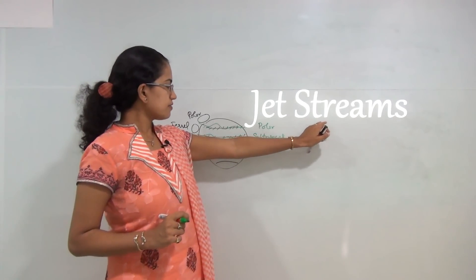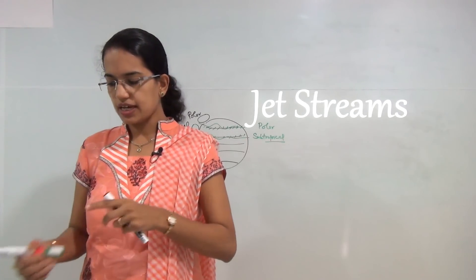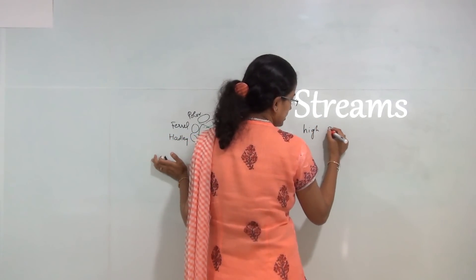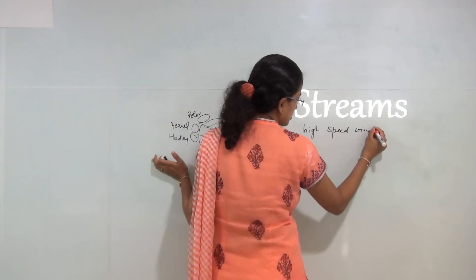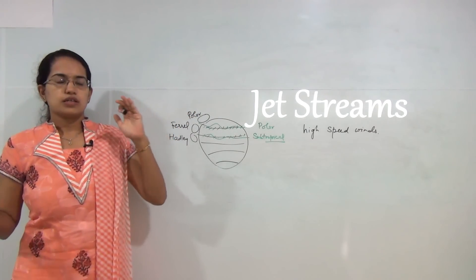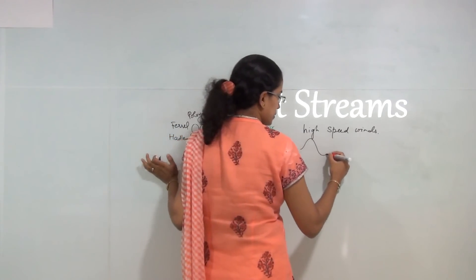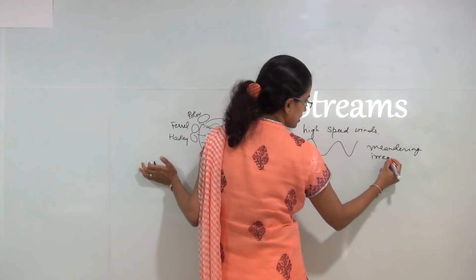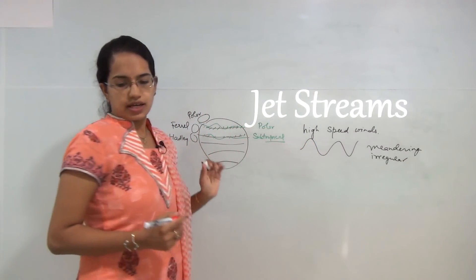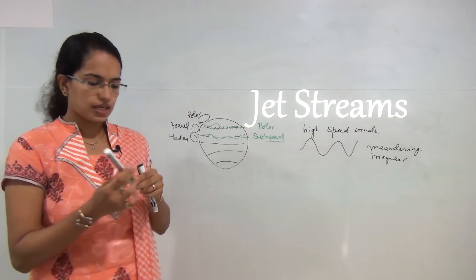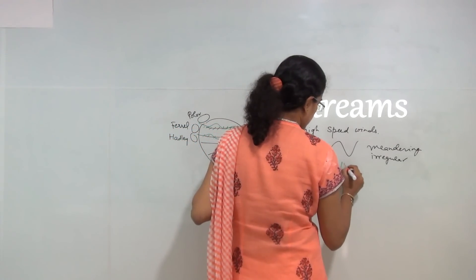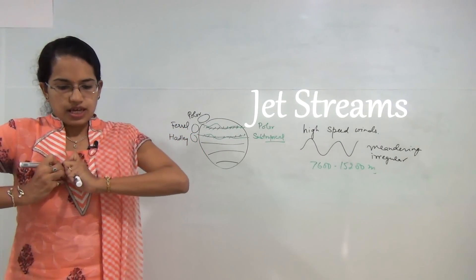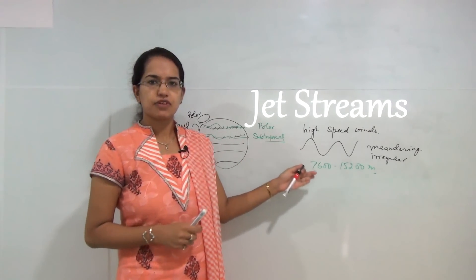Jet streams are high-speed winds that blow in the upper troposphere. They blow not in a regular fashion but in a meandering fashion, forming irregular meandering bands. They are concentrated to specific areas, found at about 7,000 to 15,000 meters above the Earth's surface, with speeds around 250 to 550 kilometers per hour.